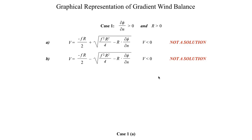Let's start with the very first case that we looked at — the case where df/dn is positive and where r is positive. We just established that we can't possibly have a physically valid solution given those two combinations of values. So let's walk through how we can visualize what the force balance is going to look like based on the information we've been given.